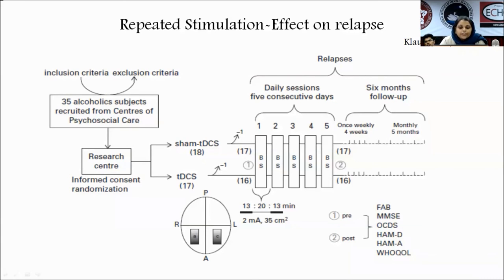Craving was assessed using relevant scales including compulsive drinking-related craving, assessed once weekly for the first four weeks and then once monthly for five months — totaling a six-month follow-up. By the end of the six months, two subjects treated with sham and eight treated with real tDCS were still alcohol abstinent — a promising result.